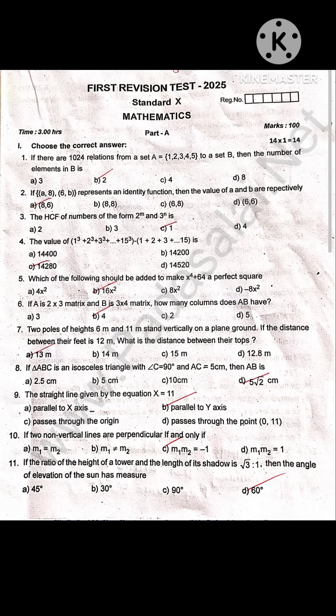Which of the following should be added to make x power 4 plus 64 a perfect square: 16 x square.